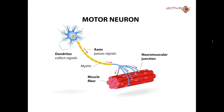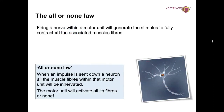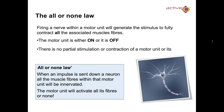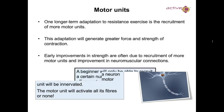The motor neuron itself has dendrites, which collect signals, and the axon, which passes the signal, along with the myelin sheath. At the end are the neuromuscular junctions which activate the muscle fiber. The all-or-nothing law states that firing a nerve with a motor unit will generate a stimulus to fully contract all of the associated muscles. The motor unit is either on or off — there is no partial stimulus or partial contraction of a motor unit or its fibers.